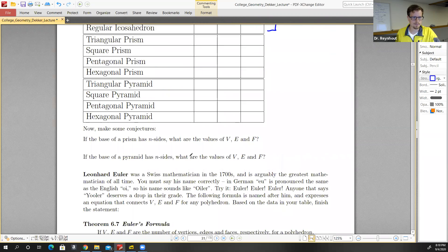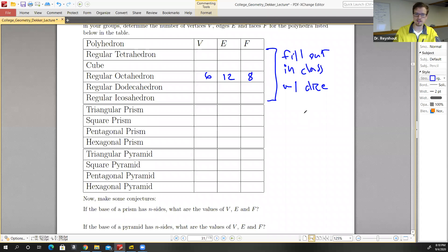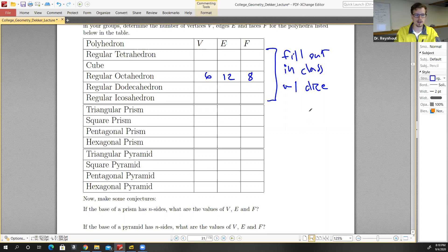But with the prisms, again, remember that you could quite easily sketch these. So for a triangular prism, you would have a triangular top, a triangular bottom. So two bases. And then the vertices of the triangles would be connected. So you can use that to help you.